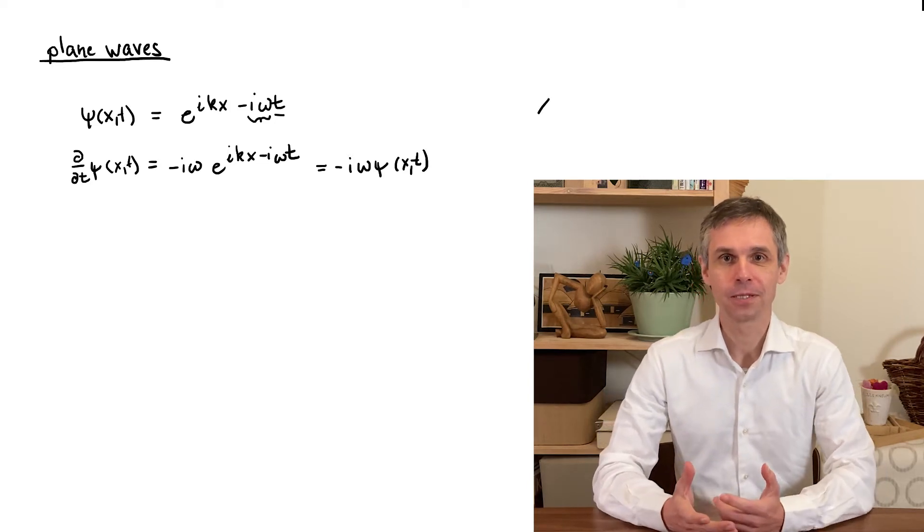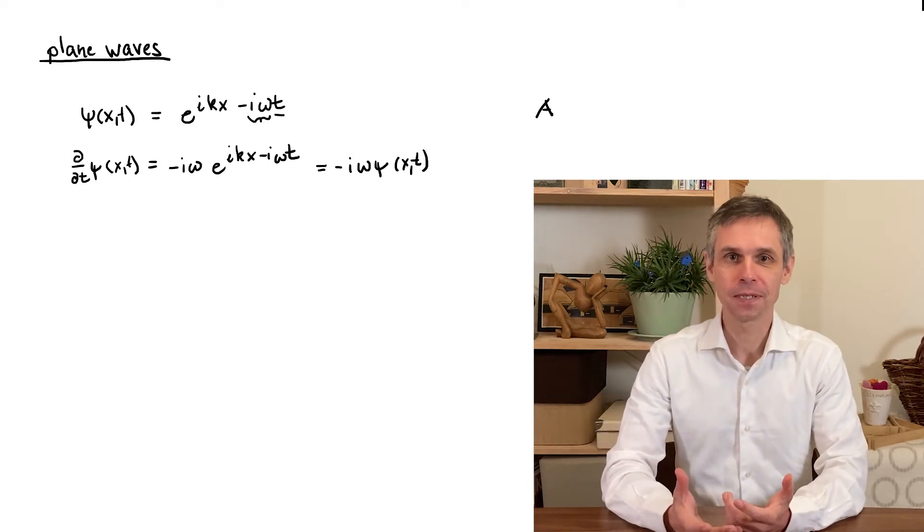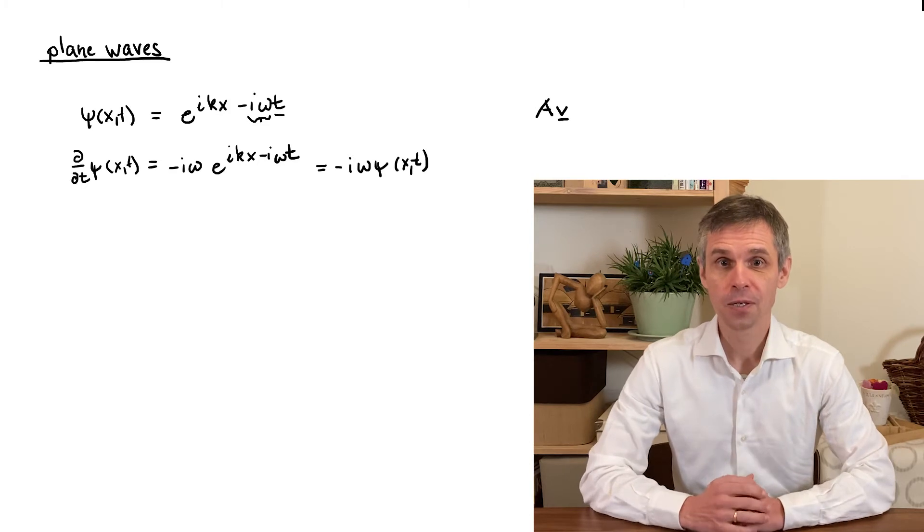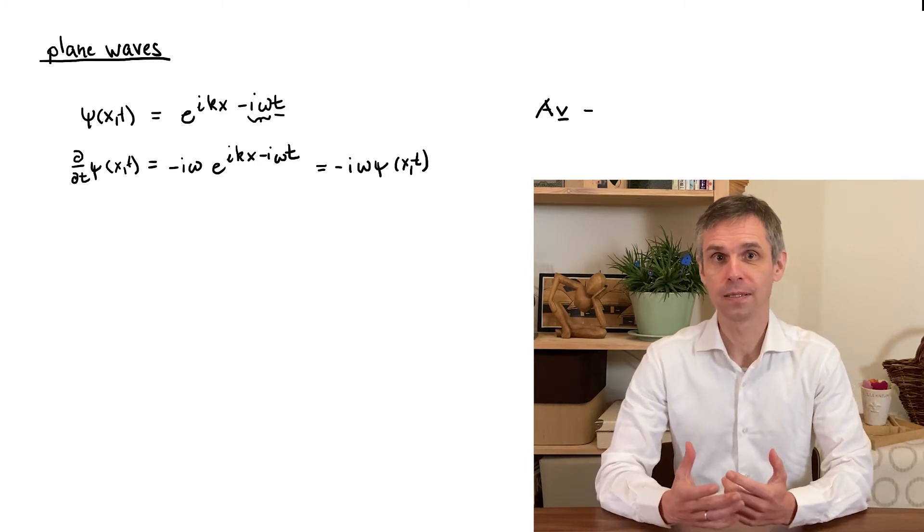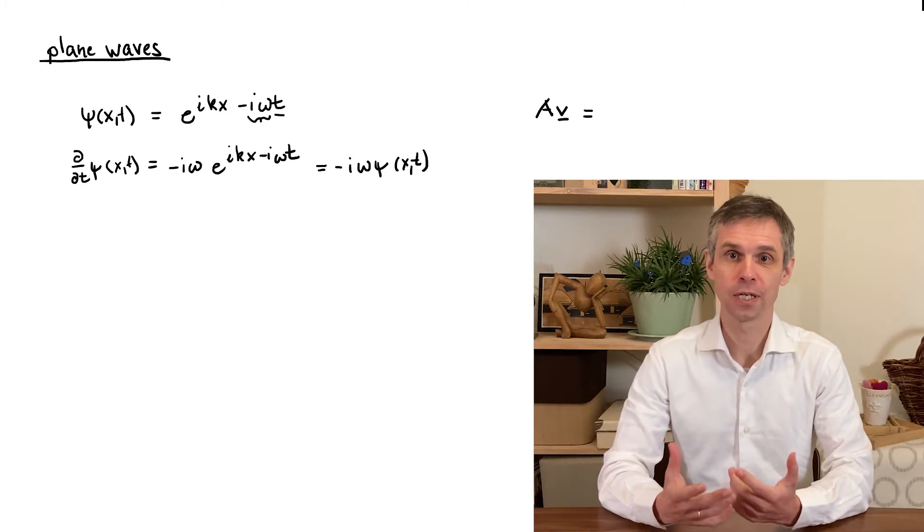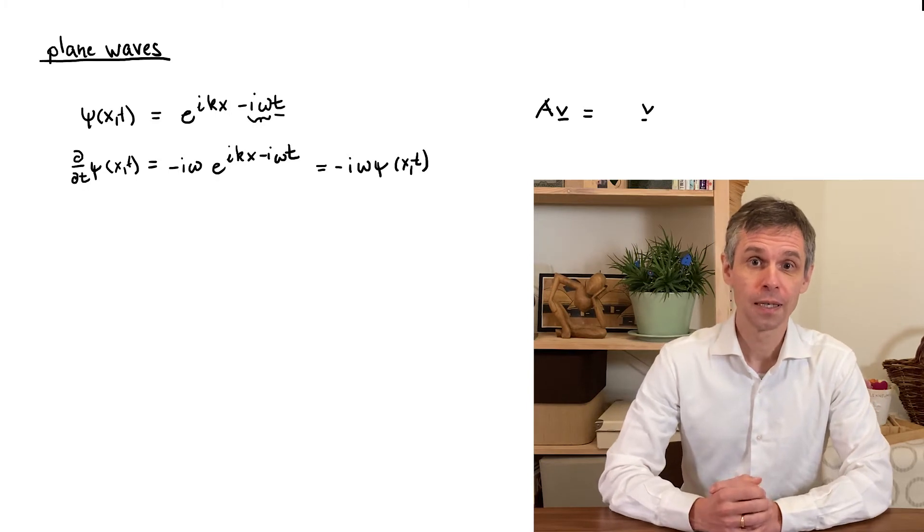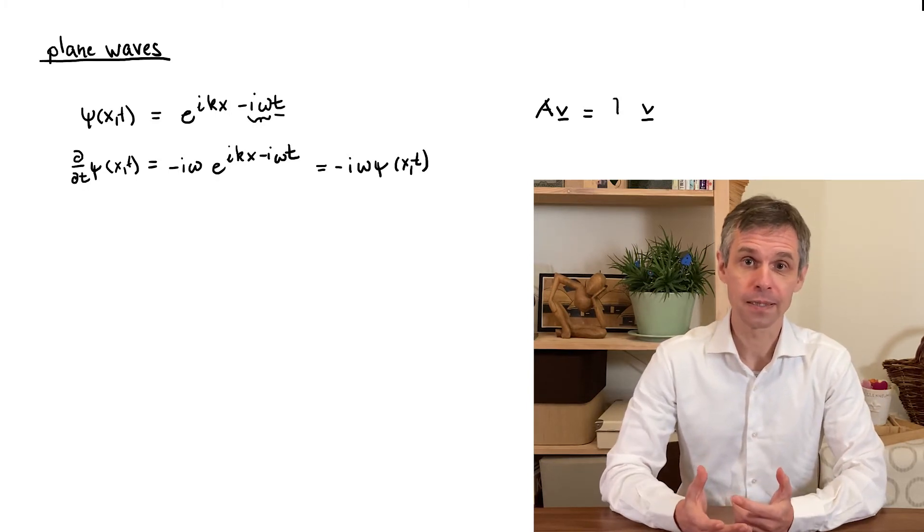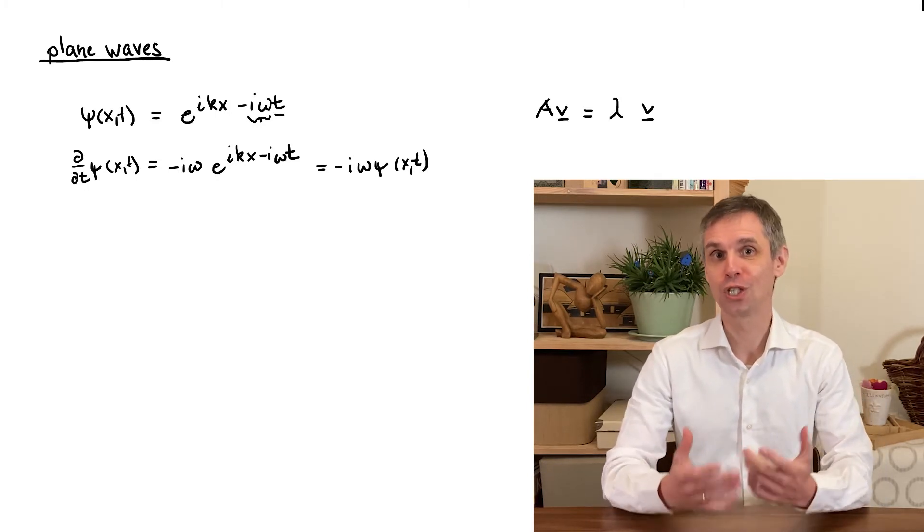This is the fact that for any given matrix A there are very special vectors v so that if you multiply such a vector by the matrix the vector does not change its direction and is only scaled in length by a scale factor lambda which is just a number.